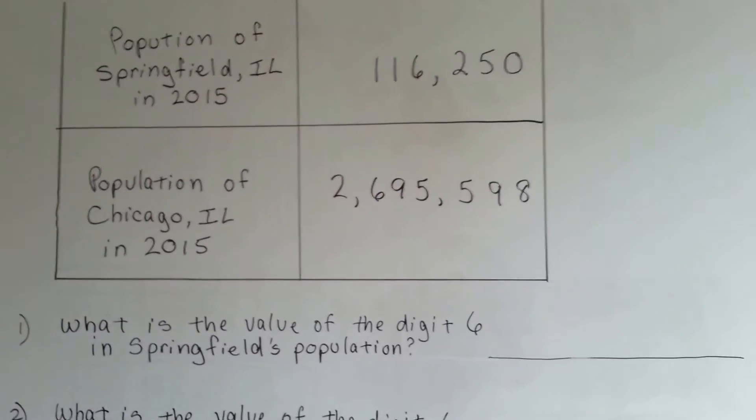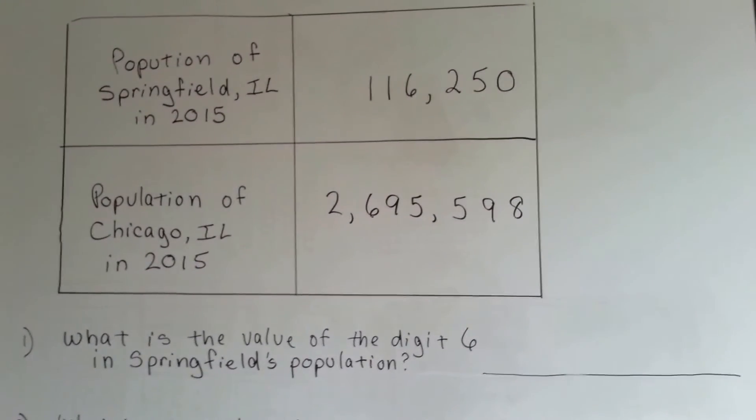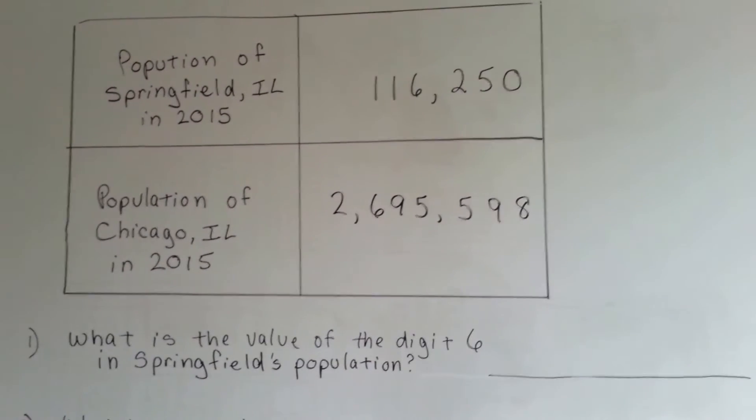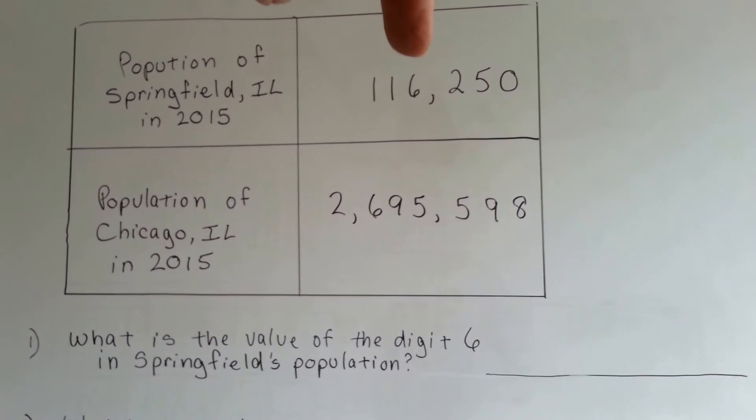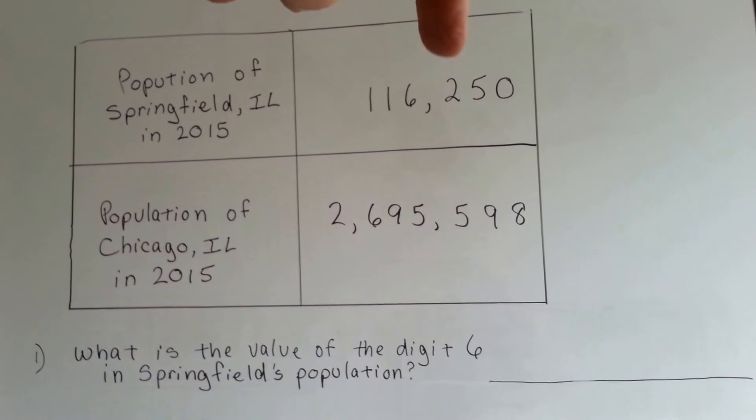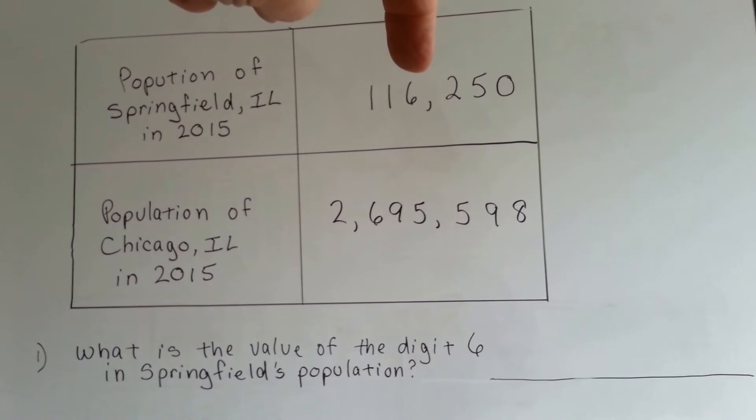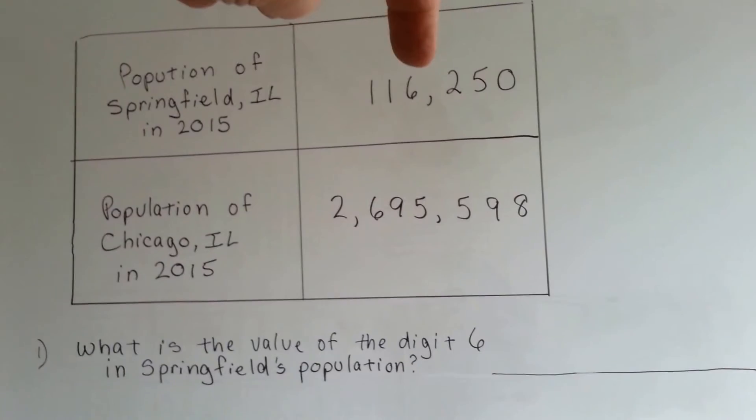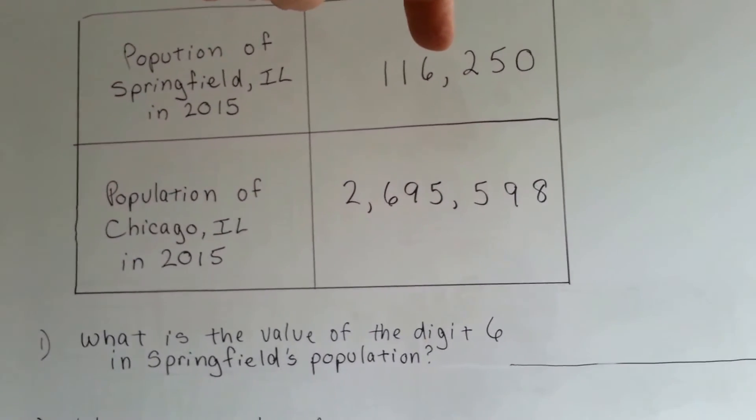What is the value of the digit 6 in Springfield's population? What is the value of this 6? Well, this is ones, tens, hundreds, thousands. One thousands. That's the one thousands place. So it's got 6,000.